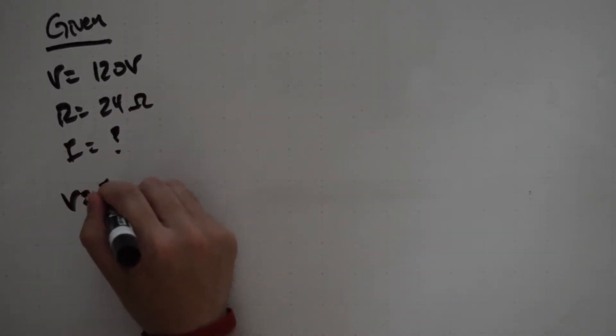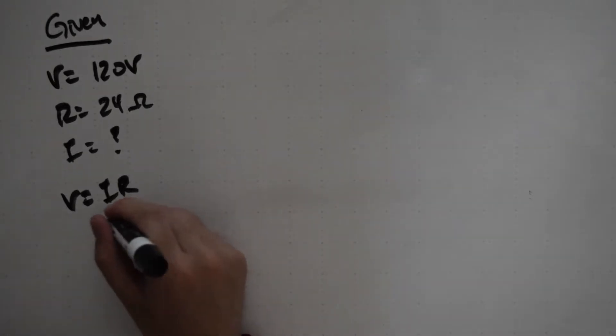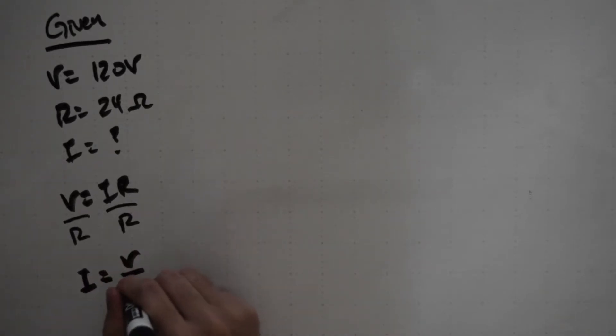If we write out our Ohm's Law, we can see that it's not quite in the right form yet. We want to have current I by itself. What we're going to do is divide both sides by R, which leaves us with a new equation, I equals V over R.